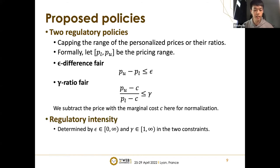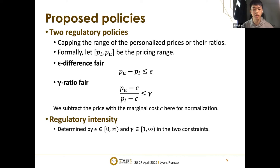The regulatory intensity is measured by epsilon and gamma respectively. For example, when epsilon is zero, it requires that prices to different consumers are exactly the same — this represents the most strict regulation and leads to the uniform pricing strategy. When epsilon turns to infinity, the pricing range is no longer regulated, representing the weakest regulation, so perfect price discrimination is possible.